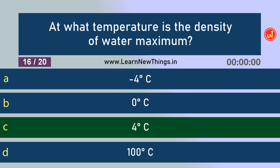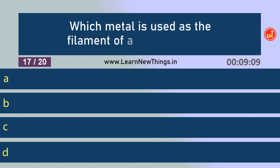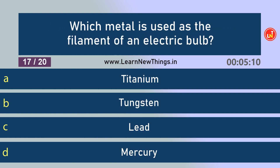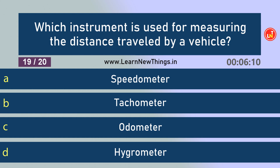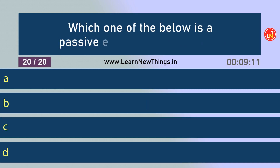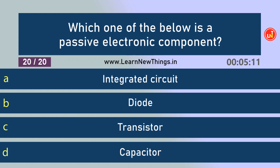The speed of light is maximum in vacuum. 4 degree Celsius is the temperature of maximum density of water. Which metal is used as the filament of an electric bulb? Tungsten. What is the working principle of a washing machine? Centrifugation. Which instrument is used for measuring the distance travelled by a vehicle? Odometer. Which one of the below is a passive electronic component? Capacitor.